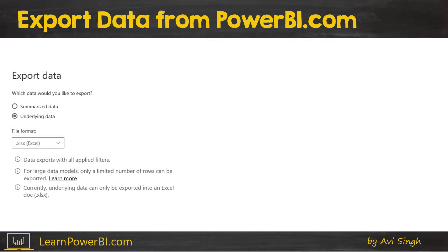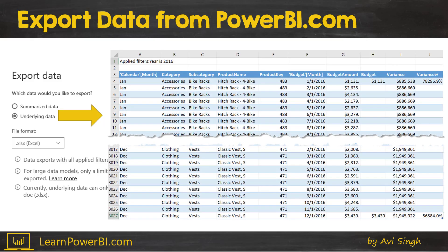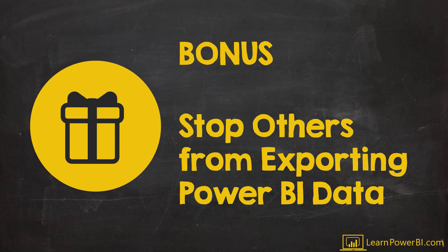Now let's look at the underlying data that comprises this graph. This might be totally unexpected — there might be fields, measures, and variables that are nowhere on that visual. So it's not the summarized data being shown in the visual; it's the underlying data coming from your data tables. This might be unexpected, which is why I want to add a bonus and tell you how you can stop others from exporting Power BI data using this option.